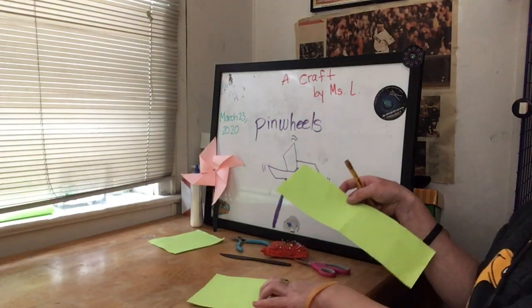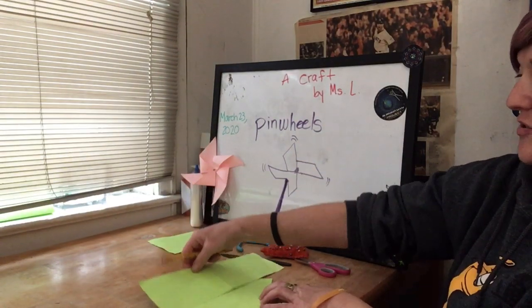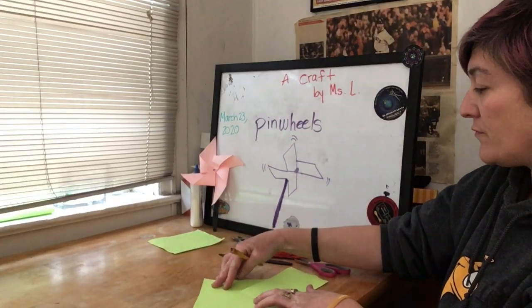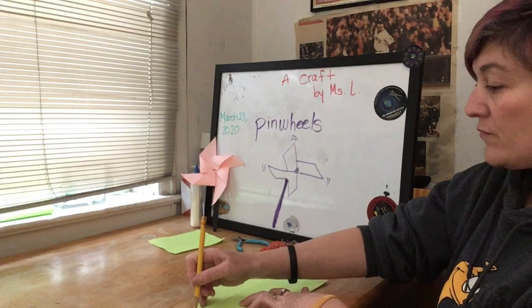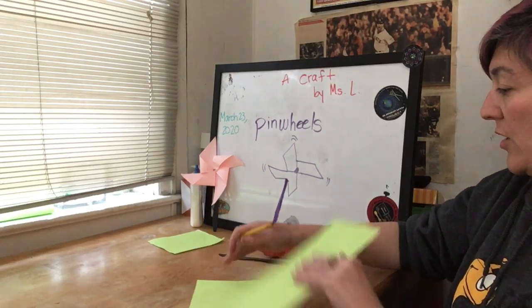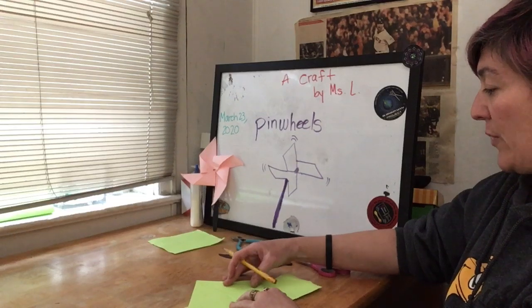So to start, we are going to draw a diagonal line across your paper and then another diagonal across the other way so that you make an X.